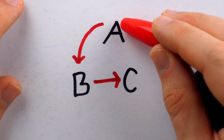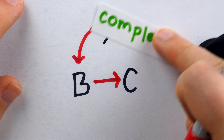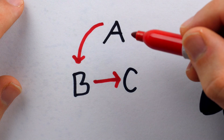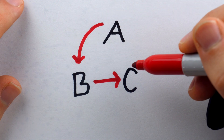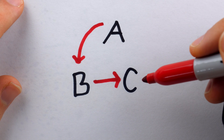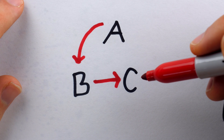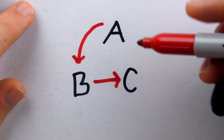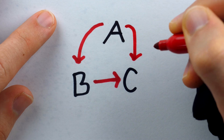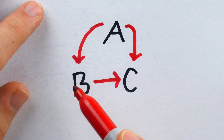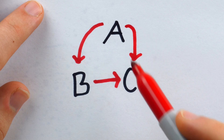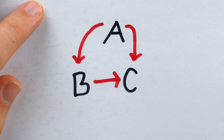Now, what about their preference between A and C? Remember the axiom of completeness — there has to be either complete indifference between these two options, or there has to be a strict preference of one over the other. And in this case, in order to not violate transitivity, it must be that the rational actor prefers A to C. If A is preferred to B and B to C, then A must also be preferred to C. The preference must be transitive.